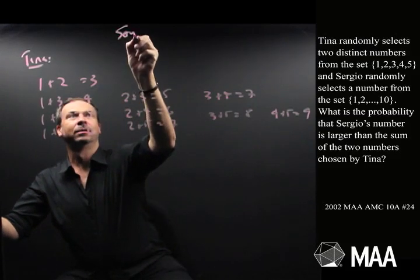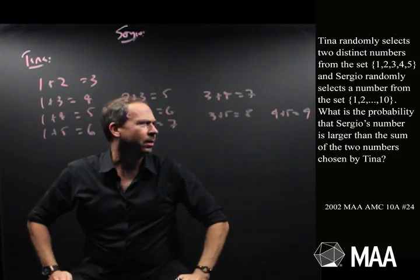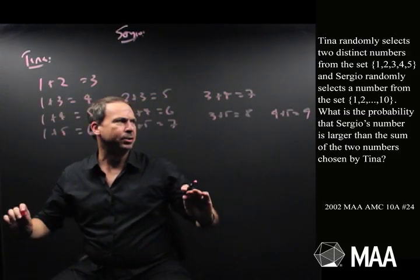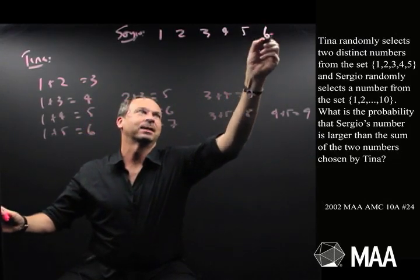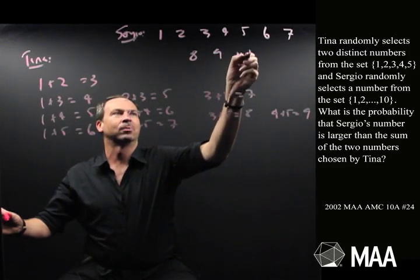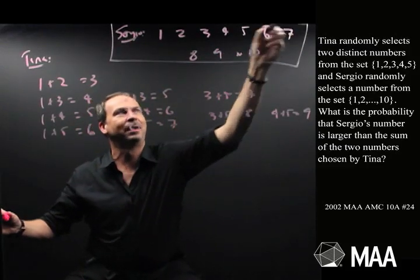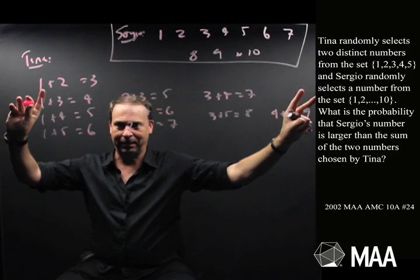Whereas Sergio, what's he doing? He chooses one number from the set 1, 2, 3, 4, 5, 6, 7, 8, 9, 10. So he gets one of these numbers. 1, 2, 3, 4, 5, 6, 7, 8, 9, or 10. So there's all of Sergio's possibilities, and there's all of Tina's possibilities.